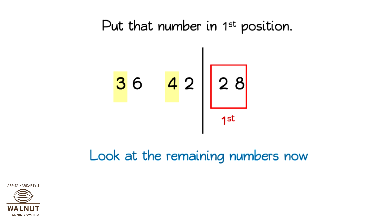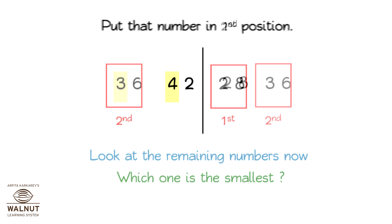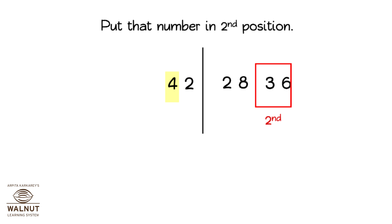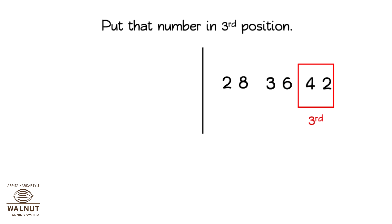Look at the remaining numbers now. Which one is the smallest? 36. Put that number in second position. Look at the last number. That will go in the third place. Put that number in third position.